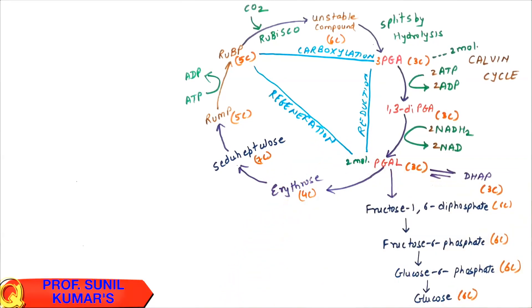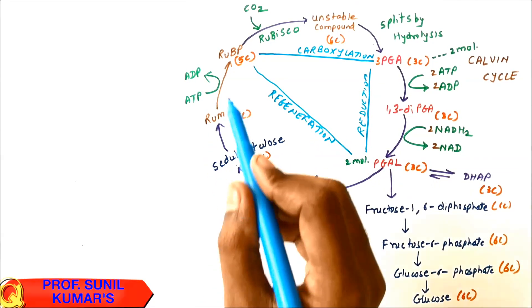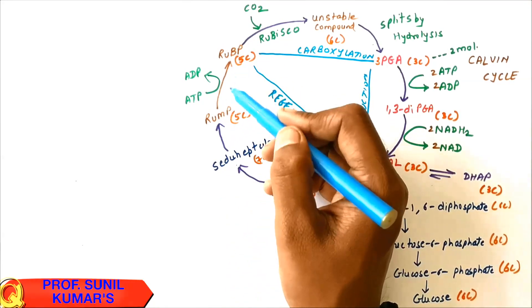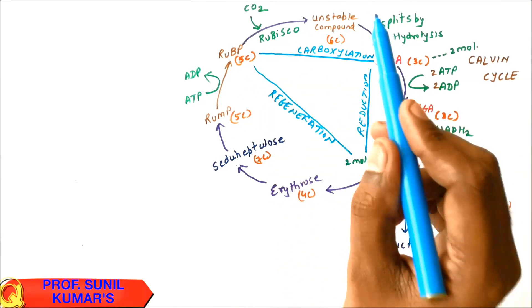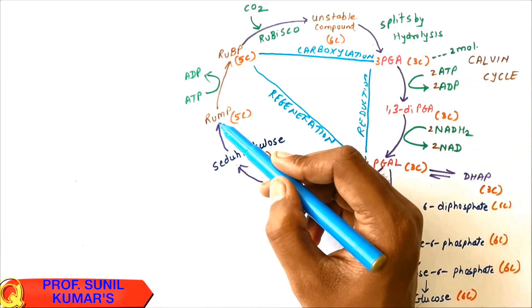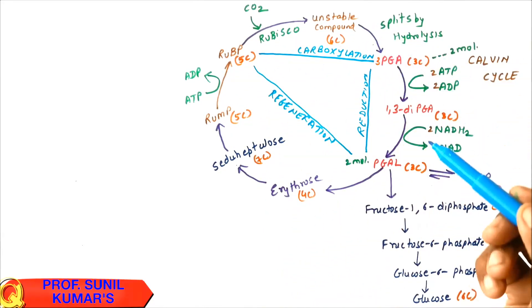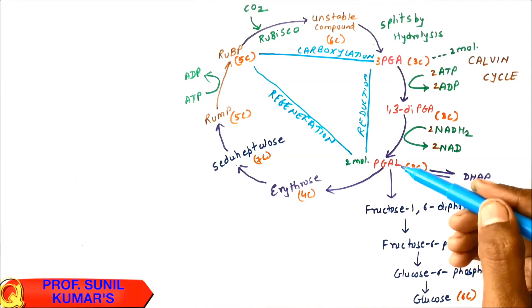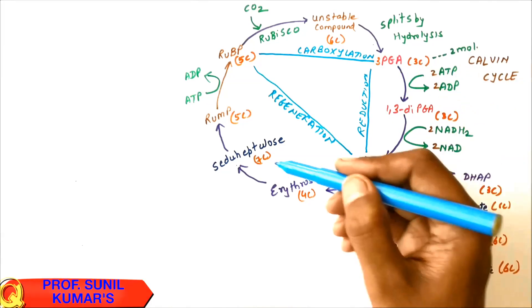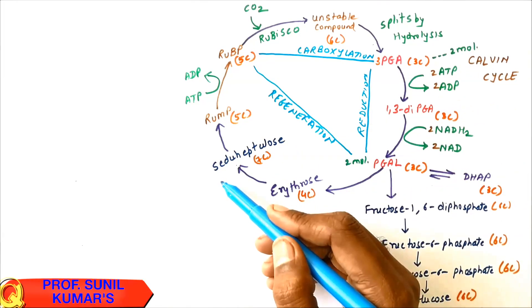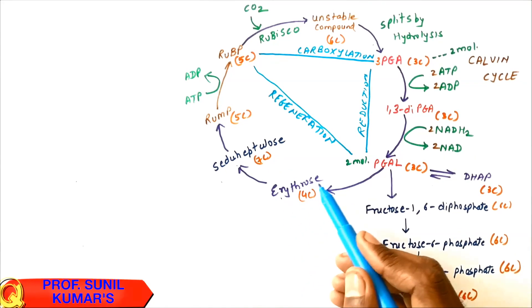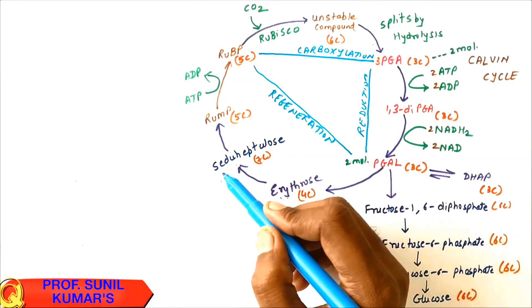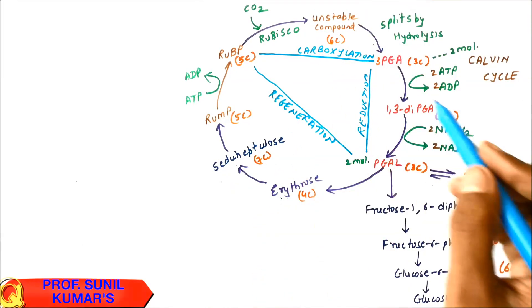To summarize the steps simply: Step 1 — carboxylation: RUBP (5C) combines with CO2 (1C) to form an unstable 6C compound. Step 2 — hydrolysis: the unstable compound splits into two molecules of 3-PGA. Step 3 — phosphorylation: 3-PGA becomes 1,3-diPGA using ATP. Step 4 — reduction: 1,3-diPGA is reduced by NADPH2 to form PGAL. Step 5 — isomerization: DHAP is isomerized to PGAL, giving 2 molecules of PGAL.